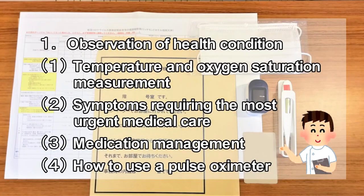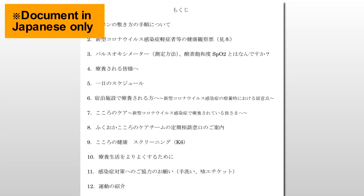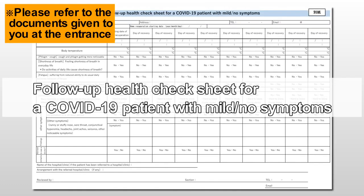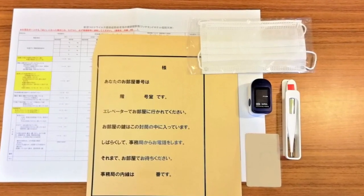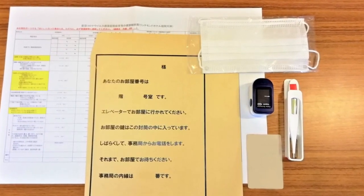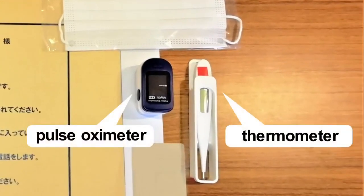Observation of Health Condition. First, we will explain temperature and oxygen saturation measurements. Please refer to the table of contents and open the follow-up health check sheet for COVID-19 patients with mild to no symptoms page. When you enter the room, first take your temperature and measure your oxygen saturation using the thermometer and pulse oximeter included in the patient's kit given to you at the entrance.